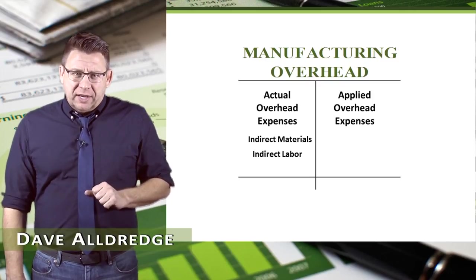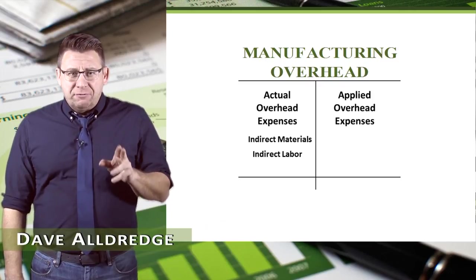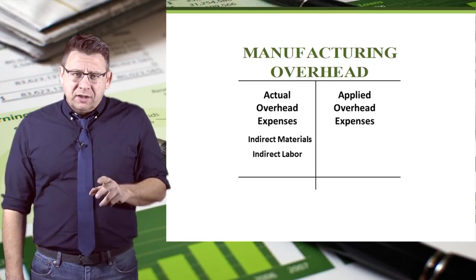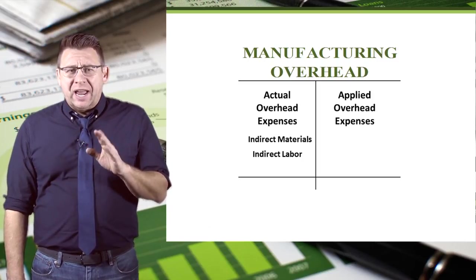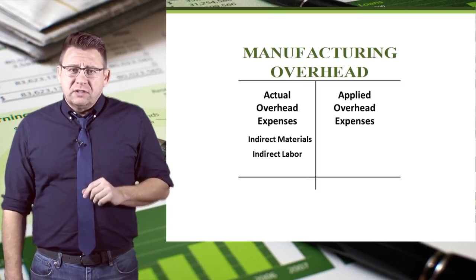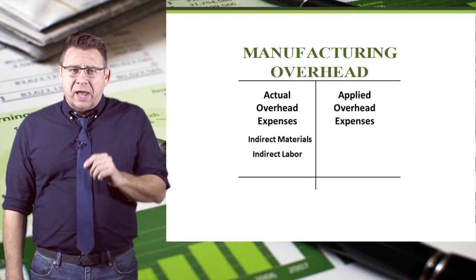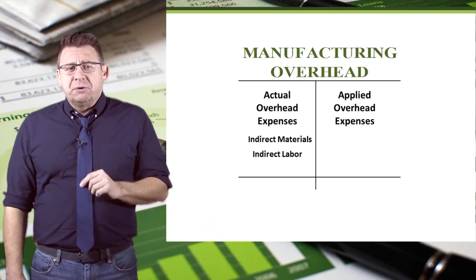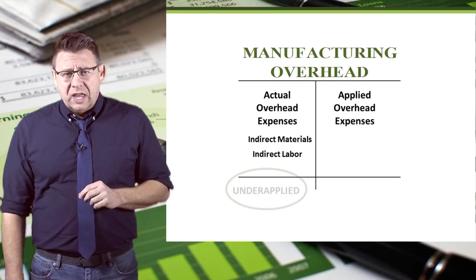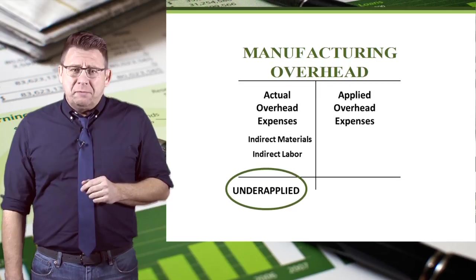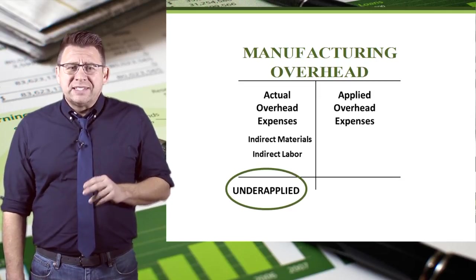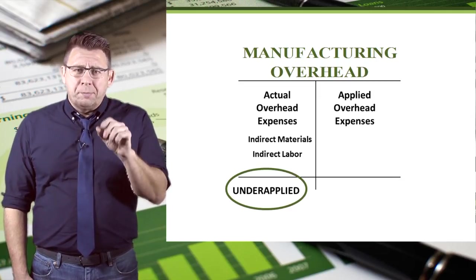Since manufacturing overhead is debited for the amount of actual overhead and credited for the amount of applied overhead, some of you have probably deduced that this account balance might not be zero at the end of the period. In fact, it almost never is. A debit balance in manufacturing overhead at the end of the period means that overhead is under-applied.